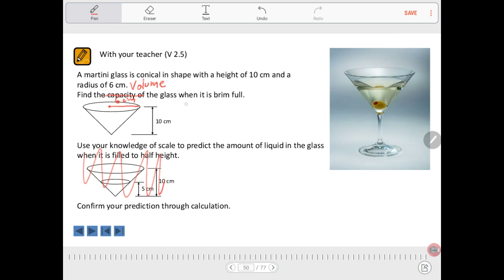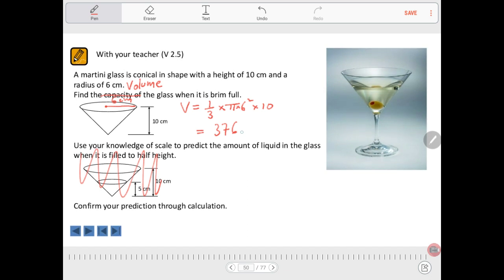So the formula is the volume equals one-third multiplied by the area of the base, which is a circle. So pi by 6 squared multiplied by the height, which is 10 centimeters. Try putting that into the calculator. This one-third might be tricky, so if you're not sure what to do with that, get me over and I can show you. The answer to two decimal places is 376.99 cubic centimeters.